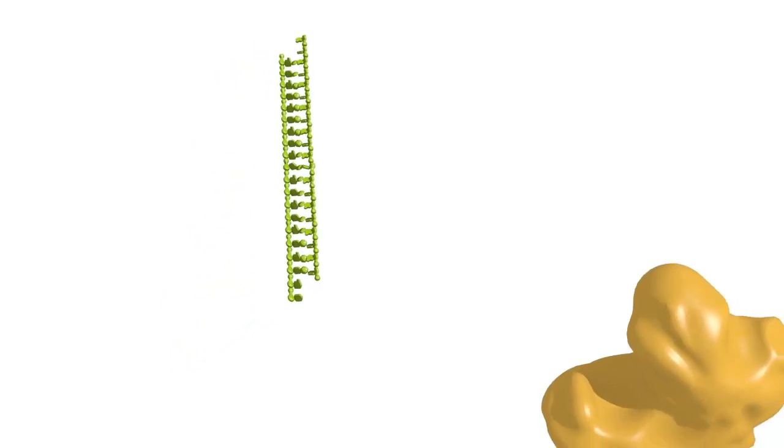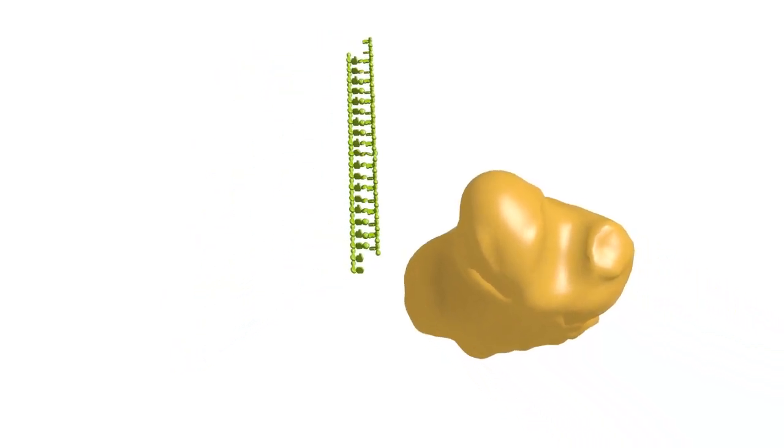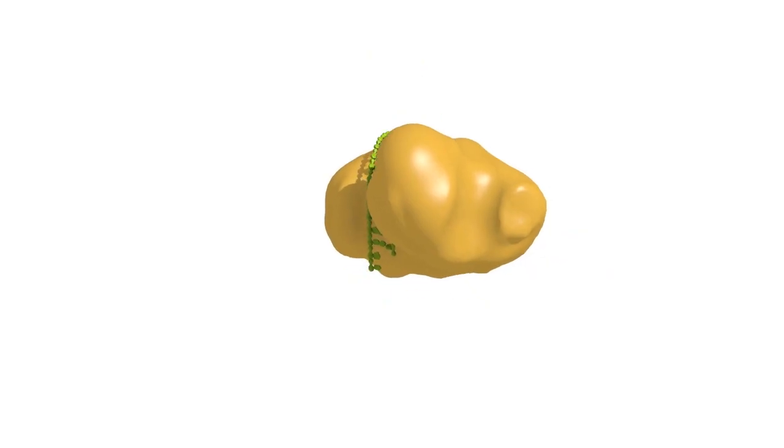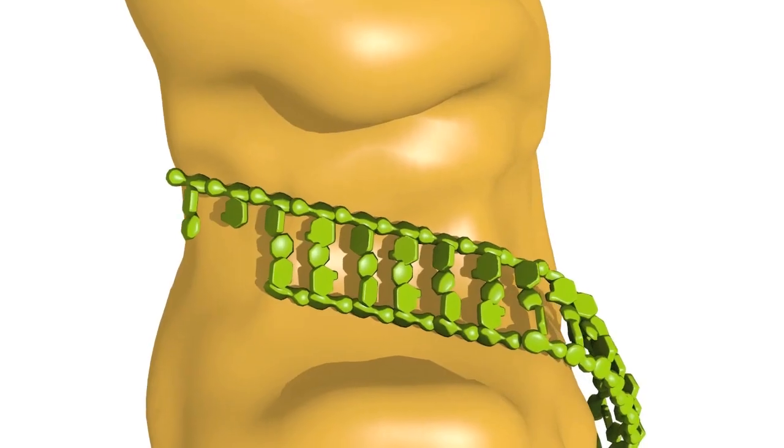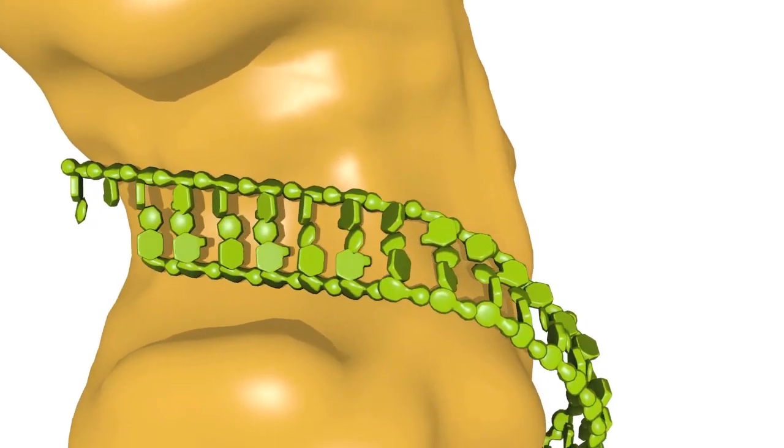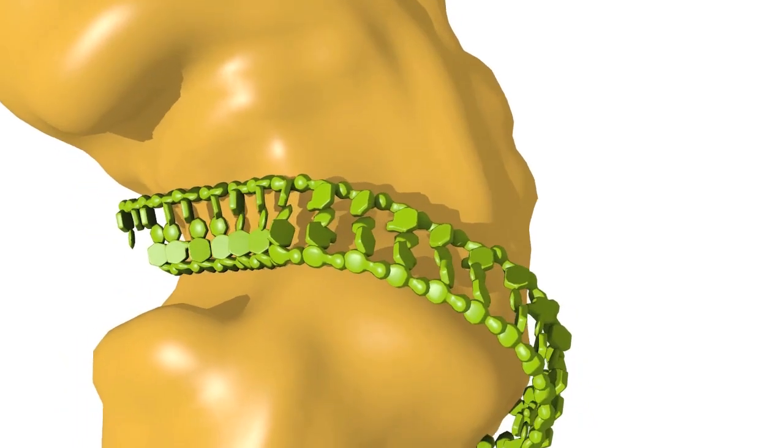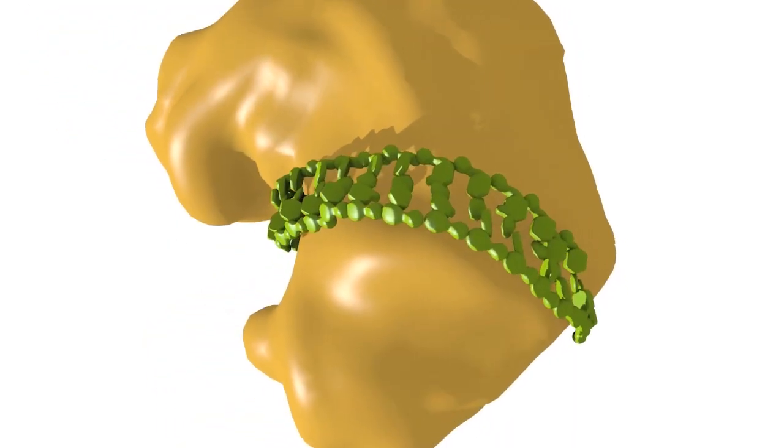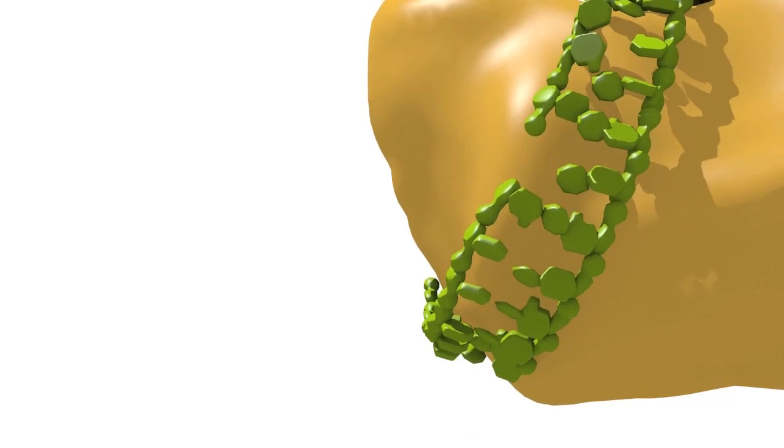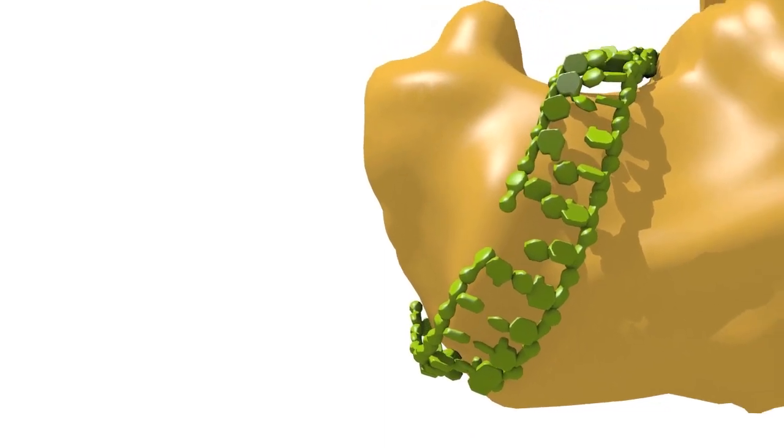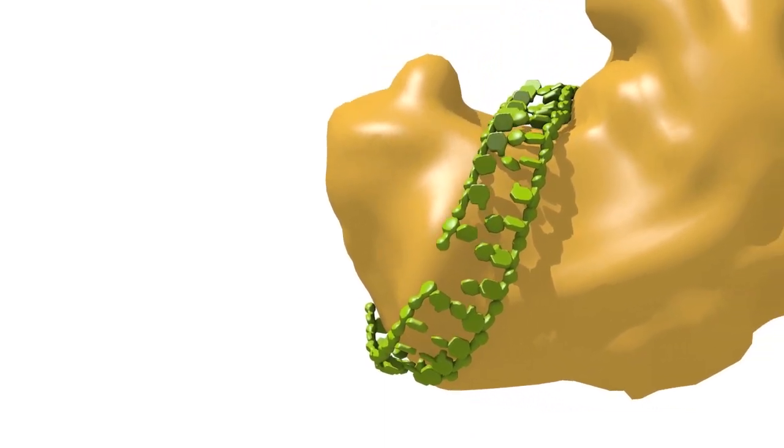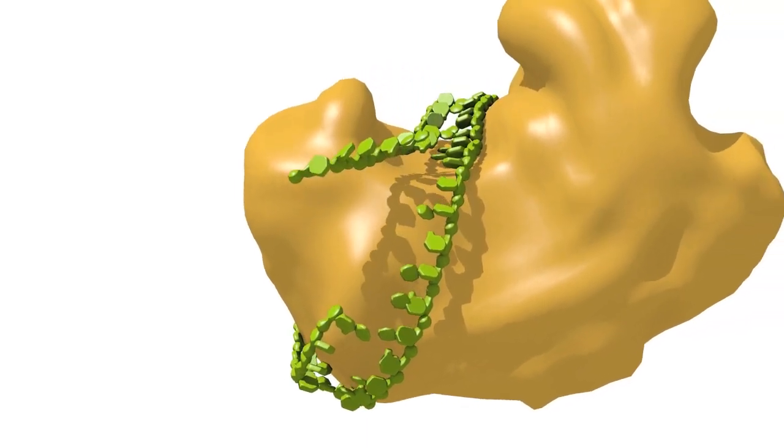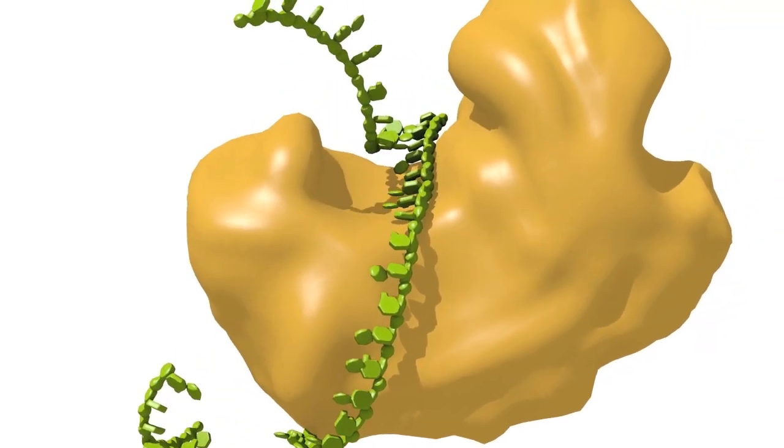Once the siR-siR-star duplex has been generated, it also is loaded into the appropriate argonaute protein, and the siR-star passenger strand is selectively removed. For these fully complementary siR-siR-star duplexes, the endogenous endonuclease activity of the PIWI domain of the argonaute protein catalyzes cleavage of the passenger strand. The cleaved strands are then easily unwound and released. This mechanism makes use of the RNase H-fold of the PIWI domain and acidic residues that are poised in the active site for such catalysis.